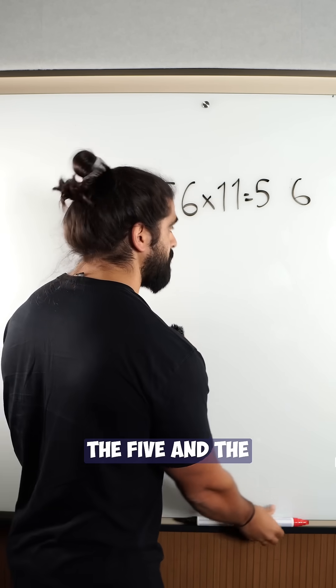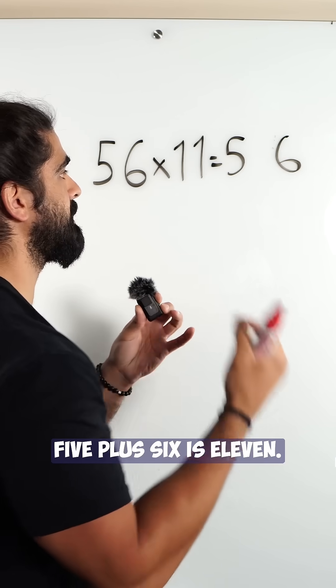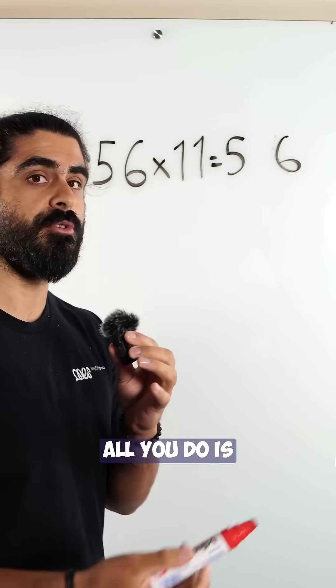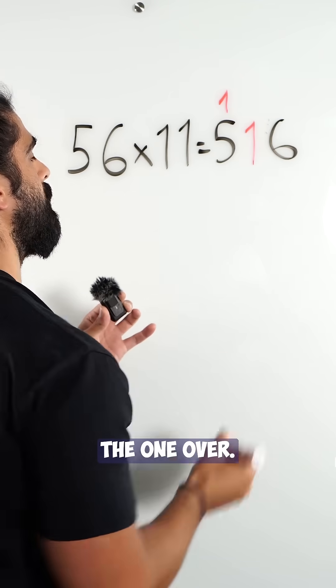Interestingly, when you add the 5 and the 6, you get a two-digit number. But we only have one spot here. 5 plus 6 is 11. All you do is you place 1 here and carry the 1 over.